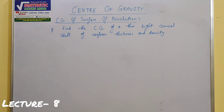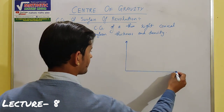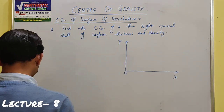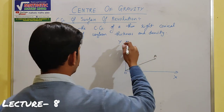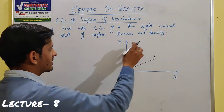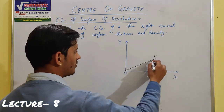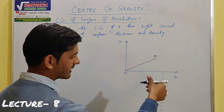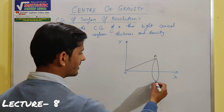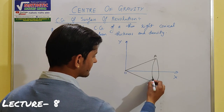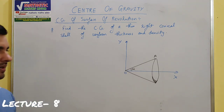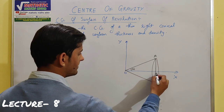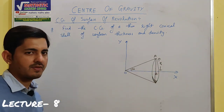Next numerical: Find the center of gravity of a thin right conical shell of uniform thickness and density। इसका diagram बनाते हैं — यह x-axis और y-axis है। Suppose हमारे पास एक cone है जिसका generator OA है। यह right circular cone है, uniform density और uniform thickness के साथ। Generator OA को x-axis के about revolve करने से एक conical shell बनेगा। इस conical shell का semi-vertical angle alpha है। Cone की height h मान लेते हैं।